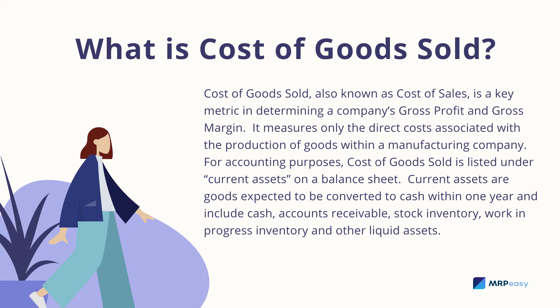What is Cost of Goods Sold? Cost of Goods Sold, also known as Cost of Sales, is a key metric in determining a company's gross profit and gross margin. It measures only the direct costs associated with the production of goods within a manufacturing company. For accounting purposes, Cost of Goods Sold is listed under Current Assets on a balance sheet.